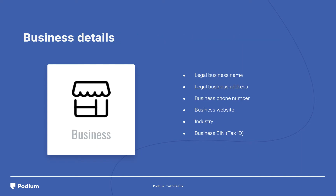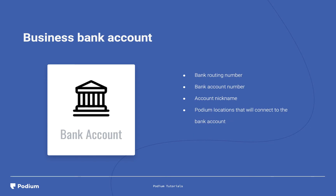You'll also need to know the business bank account information such as a legal business name, address, phone number, website, industry, and EIN for tax purposes. Finally, you'll need the routing number and bank account number for where the payments will be deposited. This is also a great time to decide if multiple locations in your Podium account will be depositing payments into the same bank account. If not, you'll be able to add multiple bank accounts to Podium and connect them to the appropriate locations.